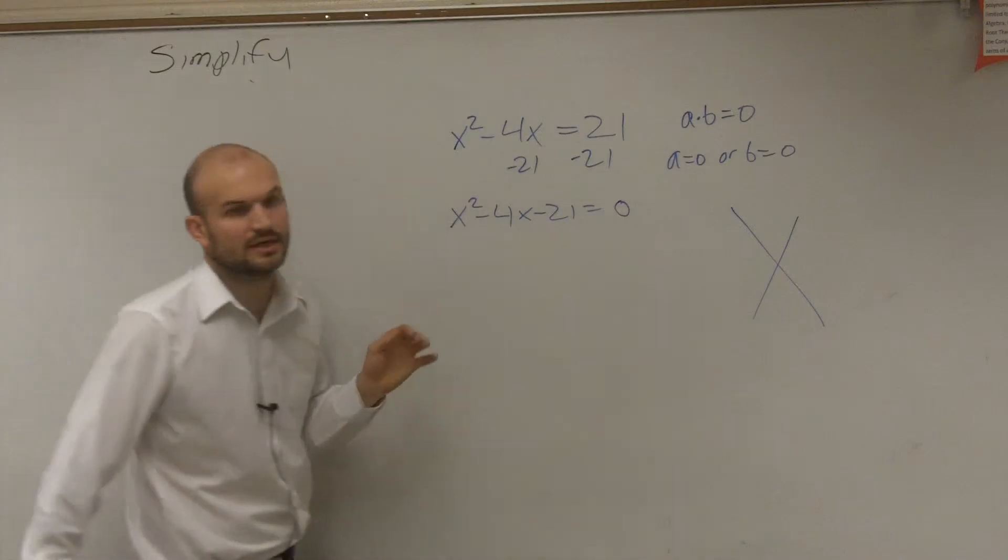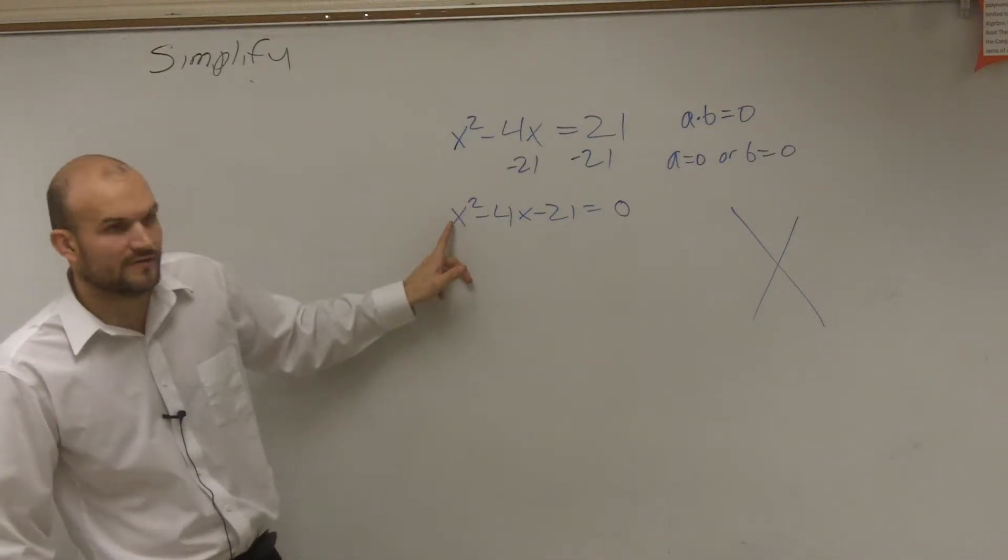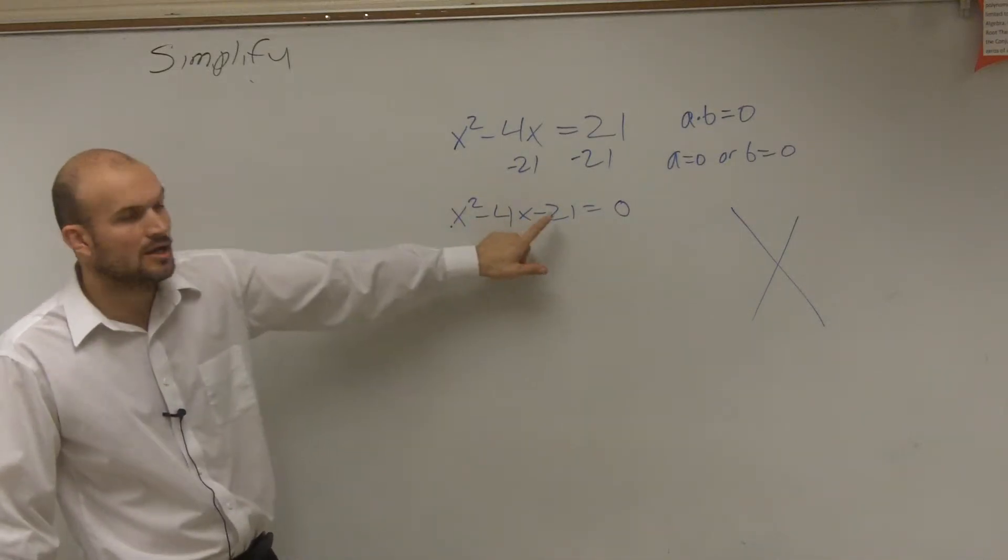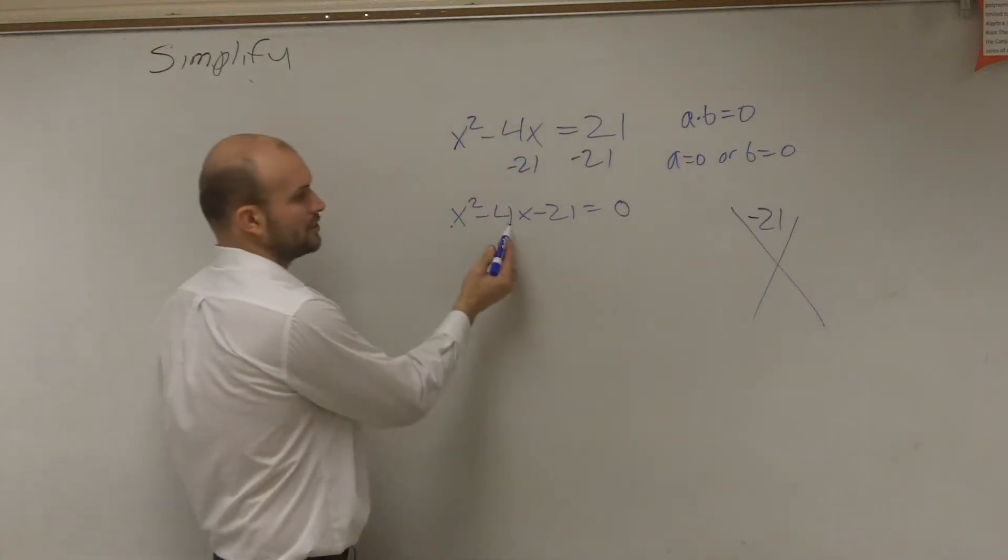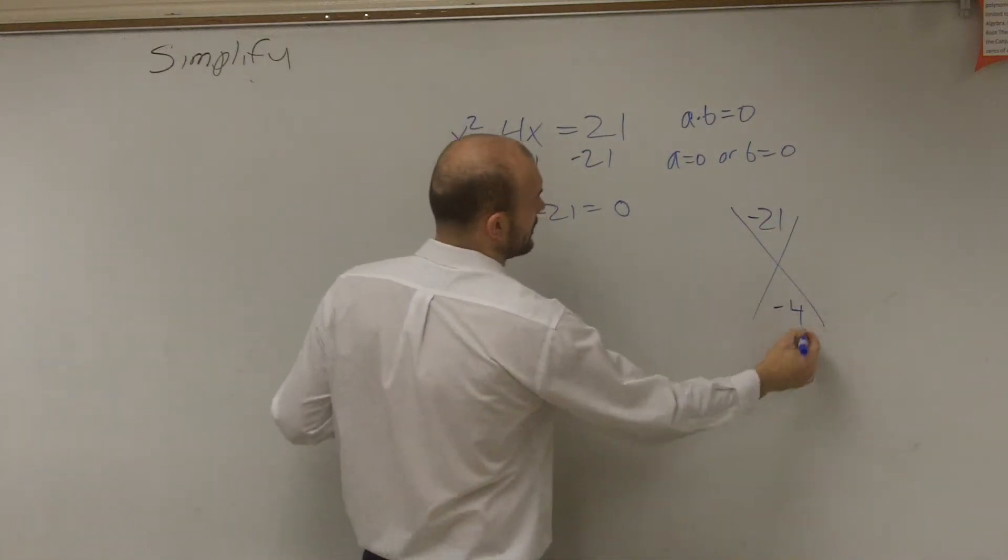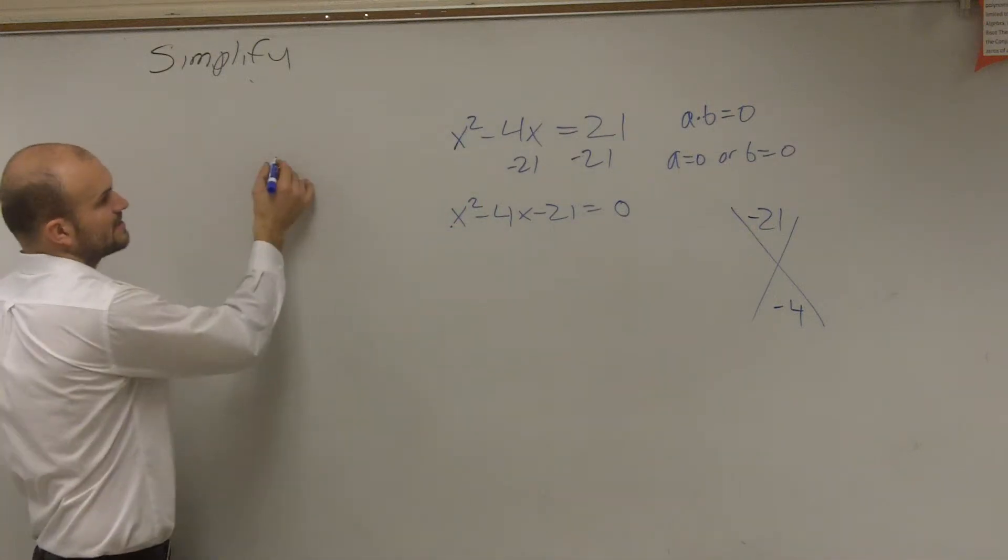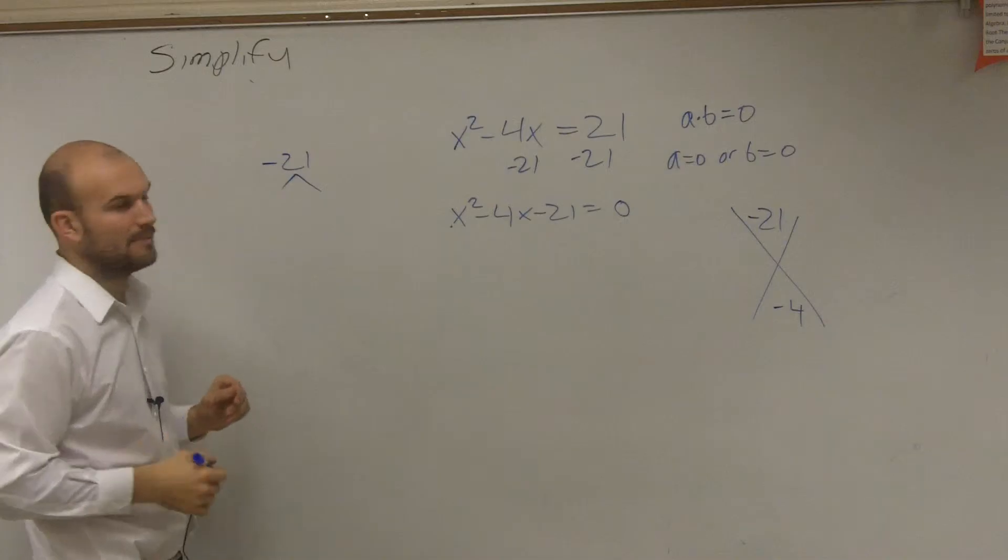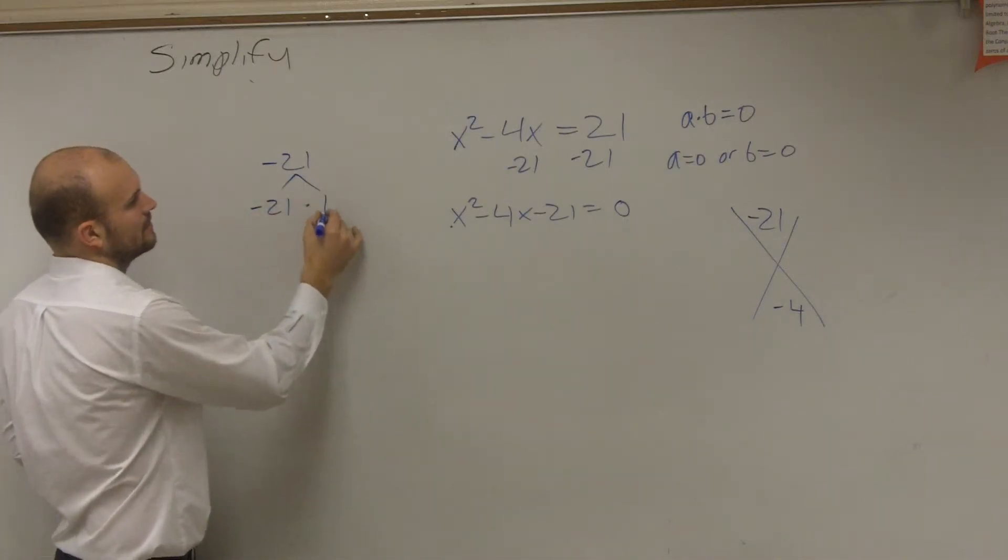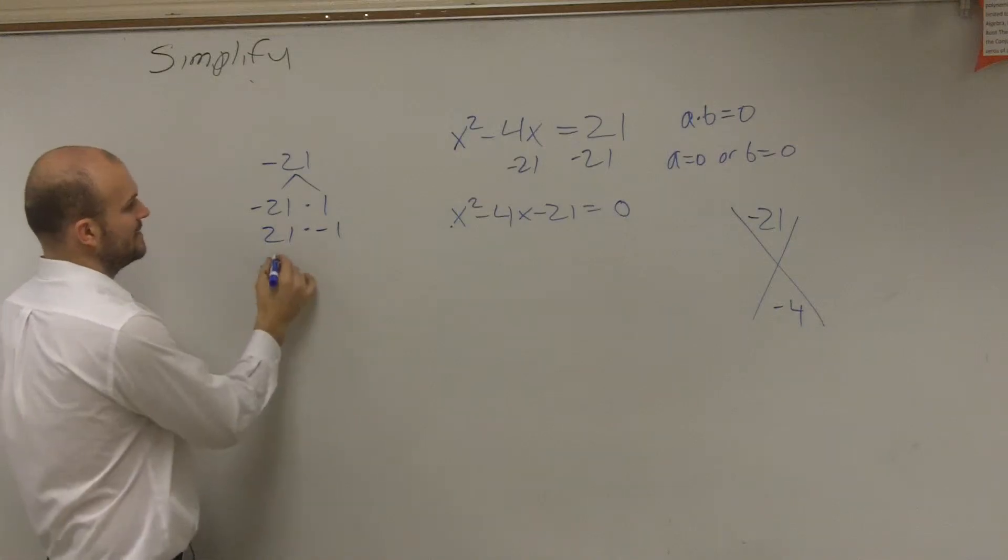You could, like I said, I like to use the x, where you take your coefficient of your first term, multiply it by your last term, which would be negative 21, and then take the coefficient of the middle term, which is negative 4. Then what you do is you list all the factors of the top and say which two numbers multiply to give you negative 21 but then add to give you negative 4.